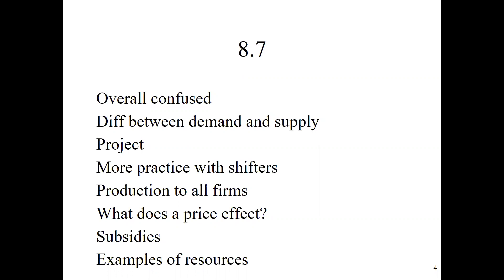We're going to talk about the difference. The easiest difference between demand and supply: demand is about consumers — consumers willing and able to buy at that price. Supply is: am I able to give you that product and make that product at that price? We'll do more practice today. When we're talking about production, we usually talk about all firms. Price only affects quantity supplied and quantity demanded — it slides up and down the curve.